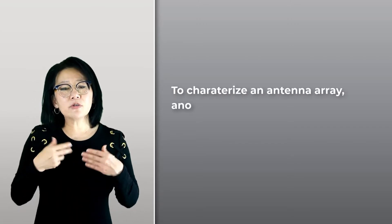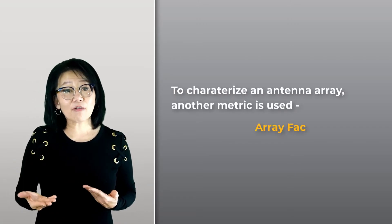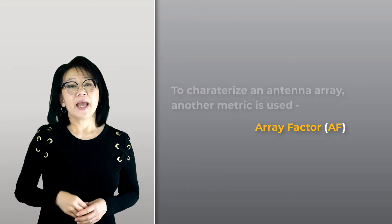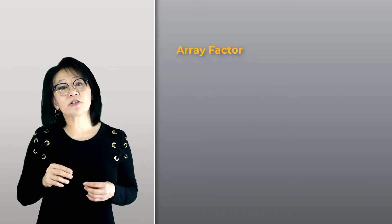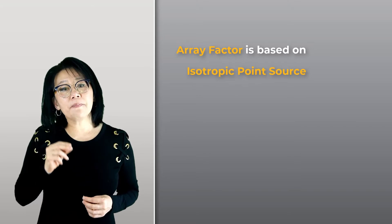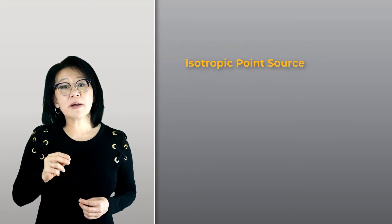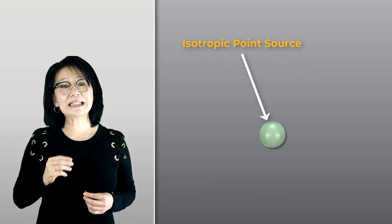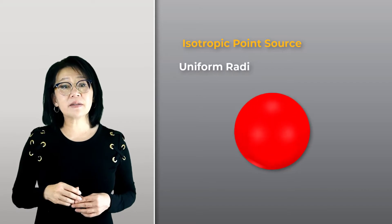When we characterize an antenna array, we use another metric called the antenna array factor AF. The antenna array factor is based on isotropic point sources—ideal antennas which radiate power in all directions.